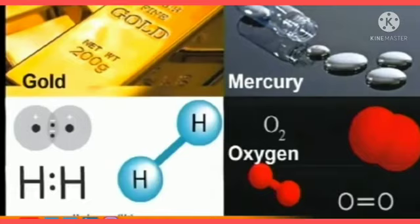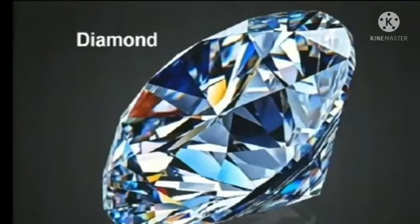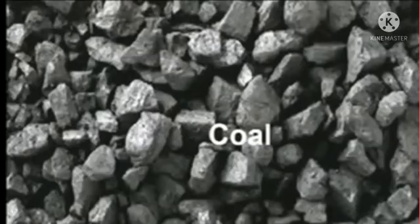Children, see this picture. Gold is a solid element. It is a metal, existing in solid form. Mercury is a liquid metal. Hydrogen and oxygen are gases. These exist in the form of elements. Coal has a complex structure and is just made up of carbon.